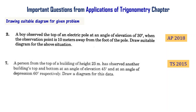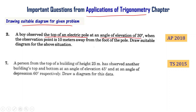Drawing a suitable diagram for the given problem is one of the important topics from applications of trigonometry. A boy observed the top of an electric pole at an angle of elevation of 30 degrees when the observation point is 10 meters away from the foot of the pole. Draw a suitable diagram for the above situation. This is from the AP public exam 2018.